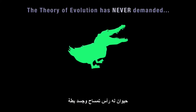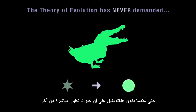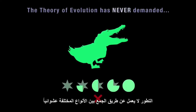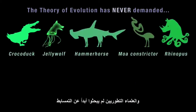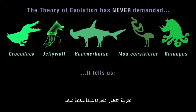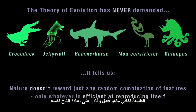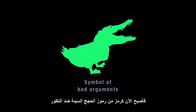The theory of evolution has never demanded the existence of animals with a crocodile's head and a duck's body. Even when there's evidence that one animal evolved directly from another, that doesn't mean transitional forms must look like whole chunks of each animal stuck together. Evolution doesn't work by combining different species at random, and evolutionary scientists have never hunted for the Crocoduck, the Jellywolf, or the Rhinopus. Nature doesn't reward just any random combination of features — it rewards only whatever is efficient at reproducing itself. The Crocoduck, invented to ridicule evolution, has instead become the symbol of bad arguments against it.